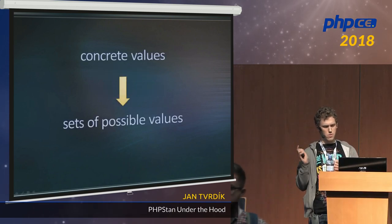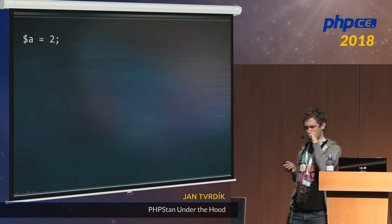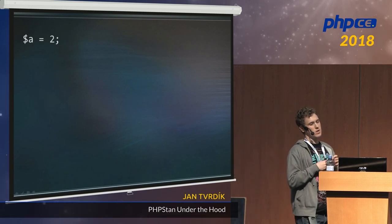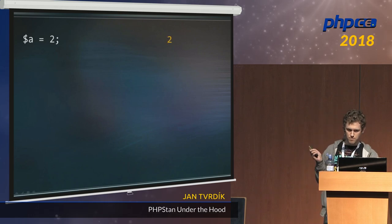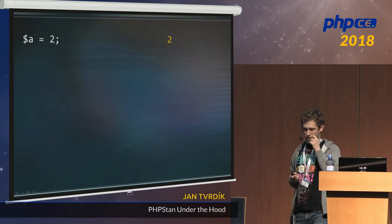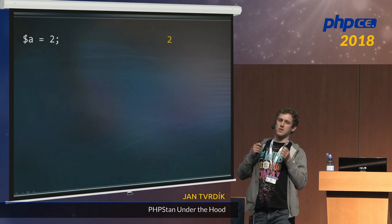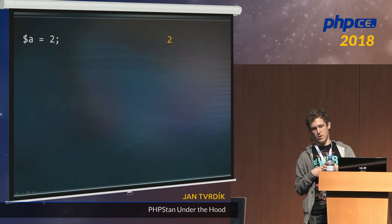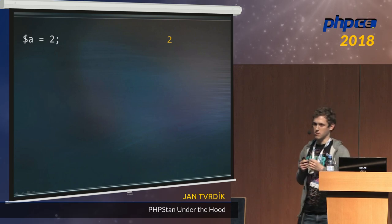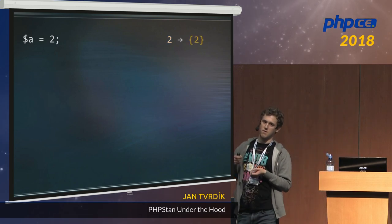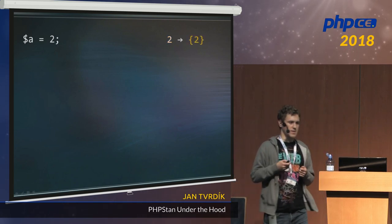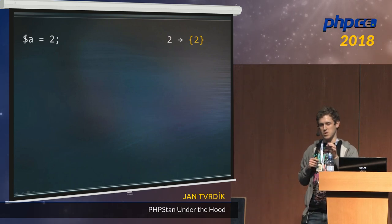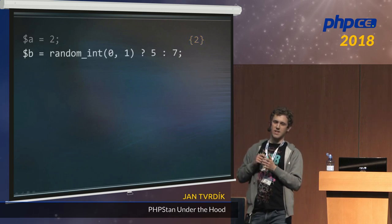Let me show you what I mean. We have simple code: we assign the number 2 to the variable A. During normal execution, the number 2 would be assigned to the variable. But that is not how PHPStan works. PHPStan doesn't operate on concrete values — it operates on sets of possible values. So instead, it assigns a set which consists of a single element, the number 2.